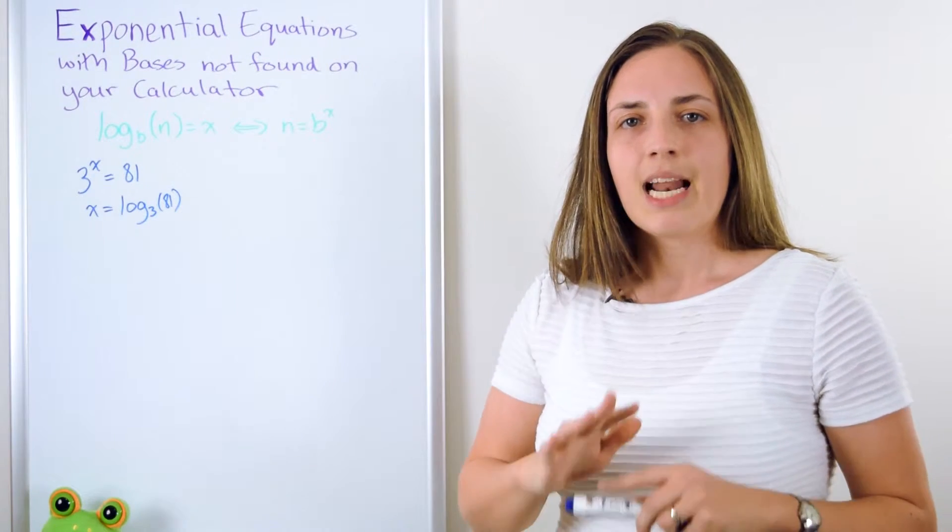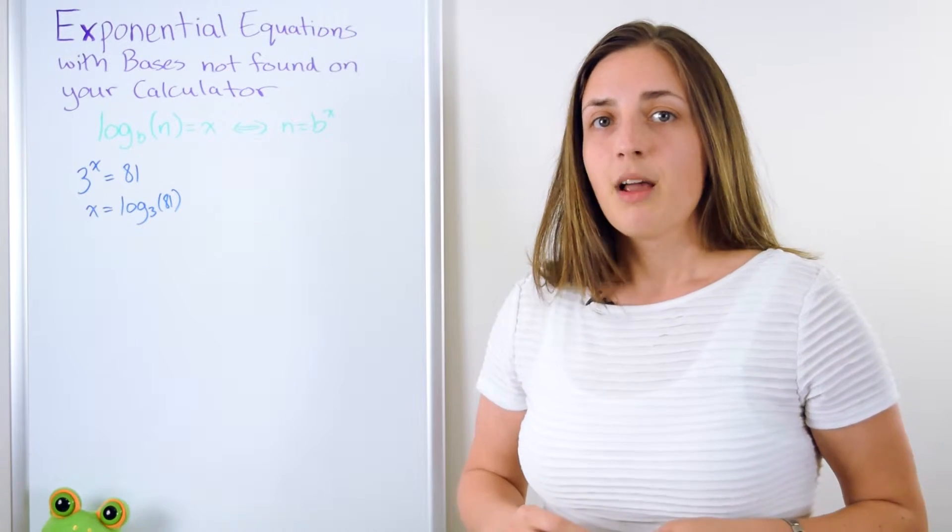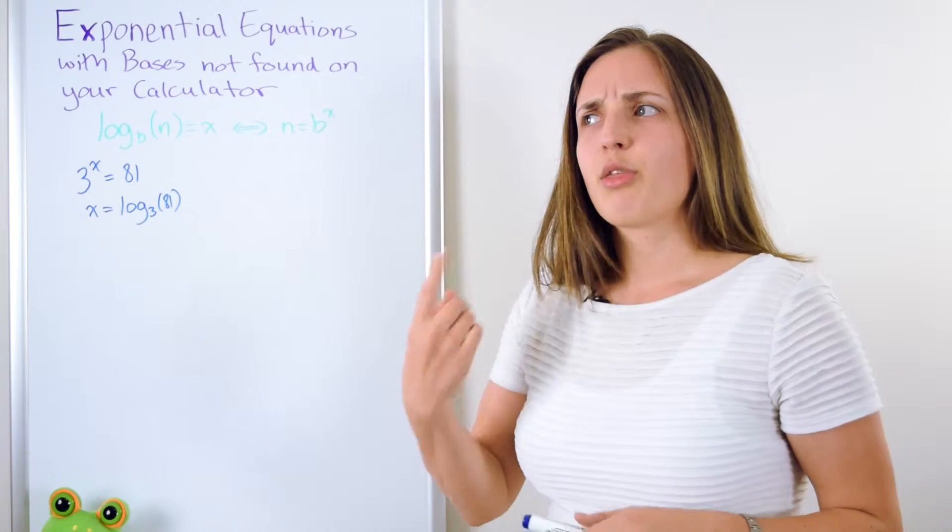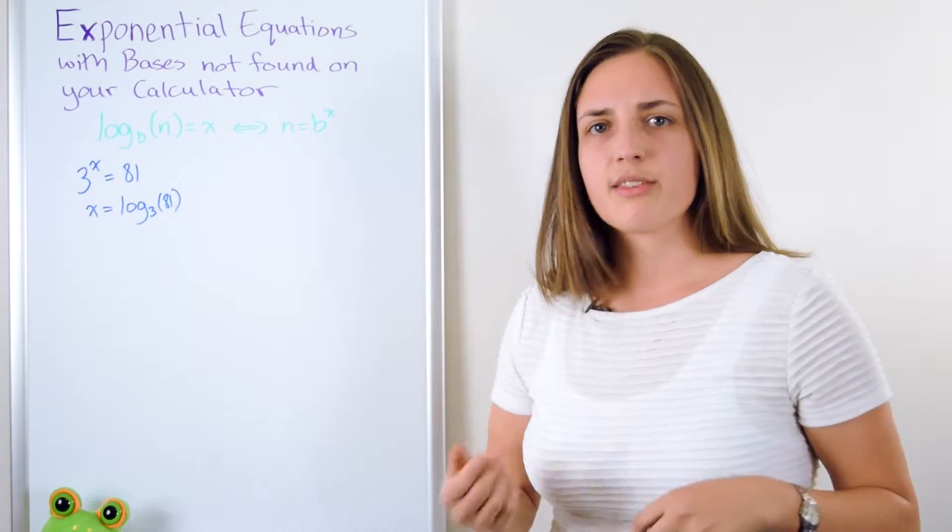That's just by definition and I'm not stuck yet because even though my calculator doesn't have base 3, my head still works. So I can think through a few examples. If I take 3 to the power of 1, I only get 3. 3 to the 2 gives me 9, 3 to the 3 gives me 27.